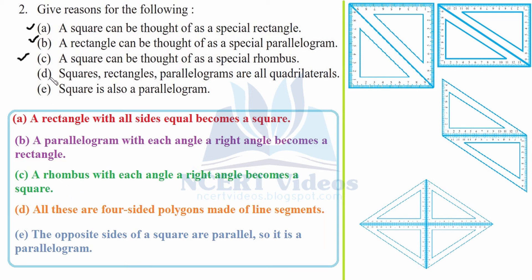Part D - squares, rectangles, and parallelograms are all quadrilaterals. The definition of a quadrilateral is a polygon having four line segments. All these shapes have four sides, therefore they are all quadrilaterals.